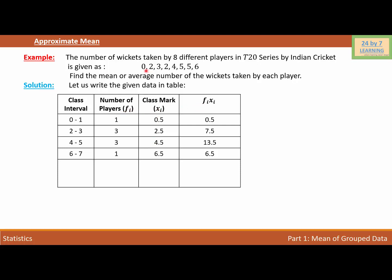Looking at the number of wickets — given as 0, 2, 3, 4, 5, and 6 — I divided the class intervals as 0 to 1, 2 to 3, 4 to 5, and 6 to 7.